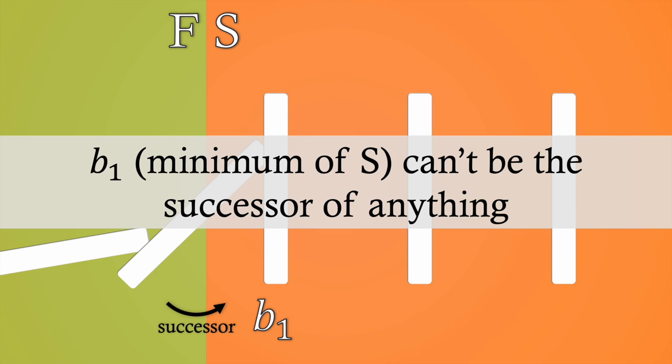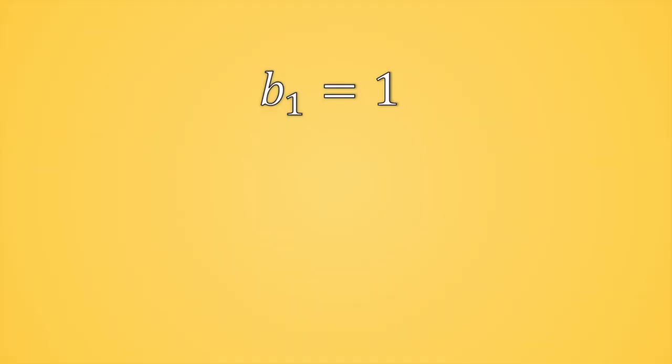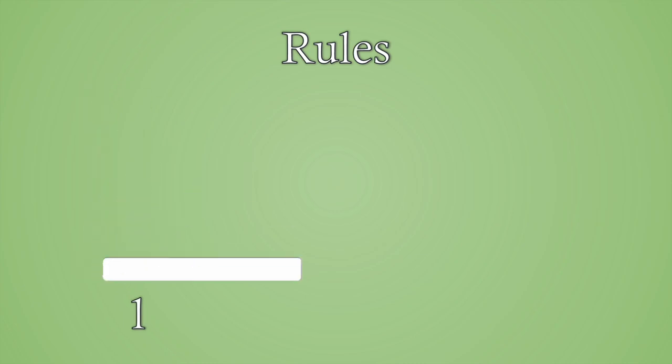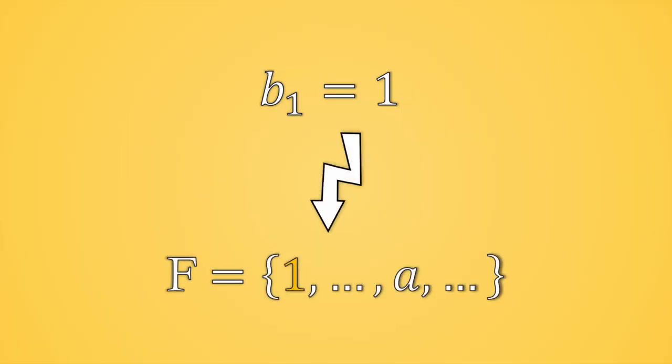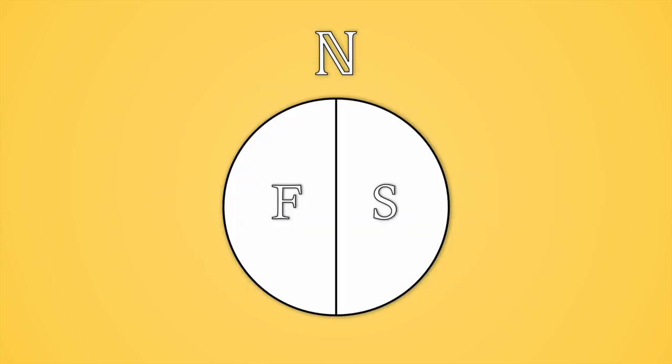The only possibility is letting b1 to be a number which isn't successor of anything. This number is our starting point, number 1, but this is a contradiction with our first rule, as 1 belongs to F, so the only option left is that in fact, there are no dominoes that remain standing. That is, S is empty, and with that, we can see that F represents all the natural numbers, so we are able to state that every domino will fall.